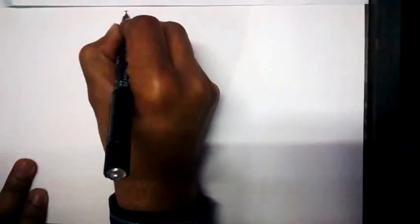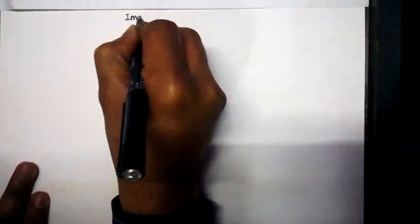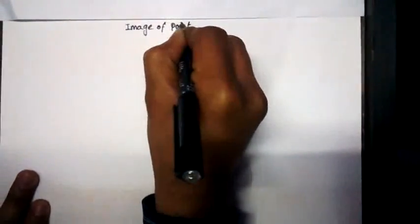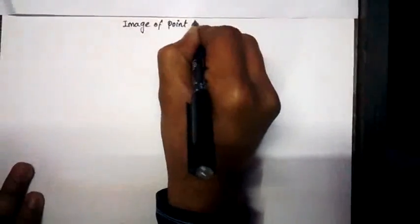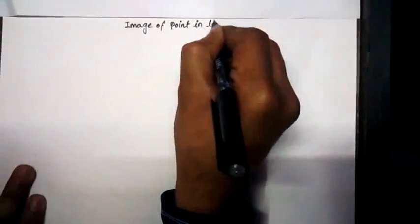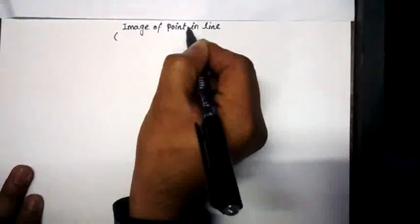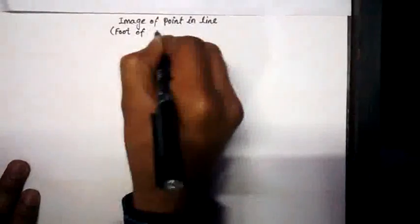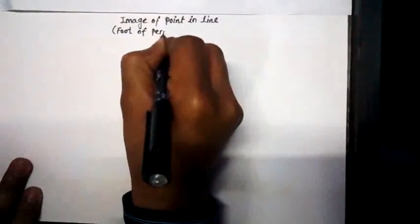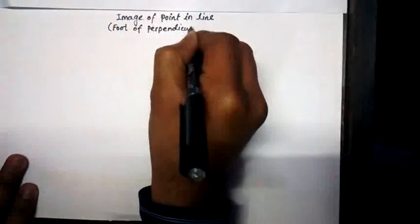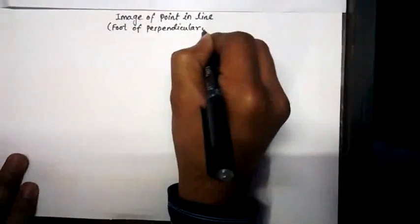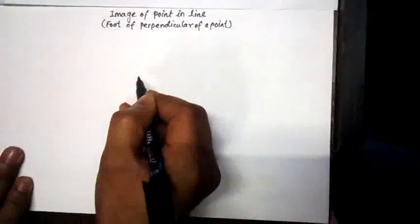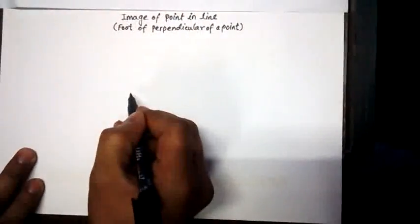Today we shall be finding the image of a given point in a given straight line. This topic is under three-dimensional geometry. When we find the image of a point in the line, the foot of perpendicular of the same point will also be obtained. Sometimes they ask for the foot of a perpendicular as well, and it will be automatically obtained in the process of finding the image of the point in the line.